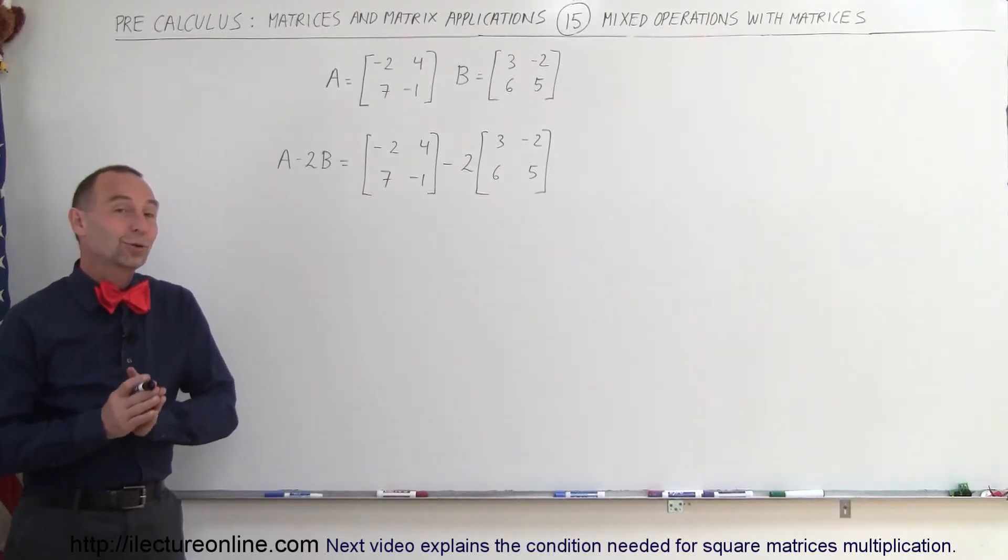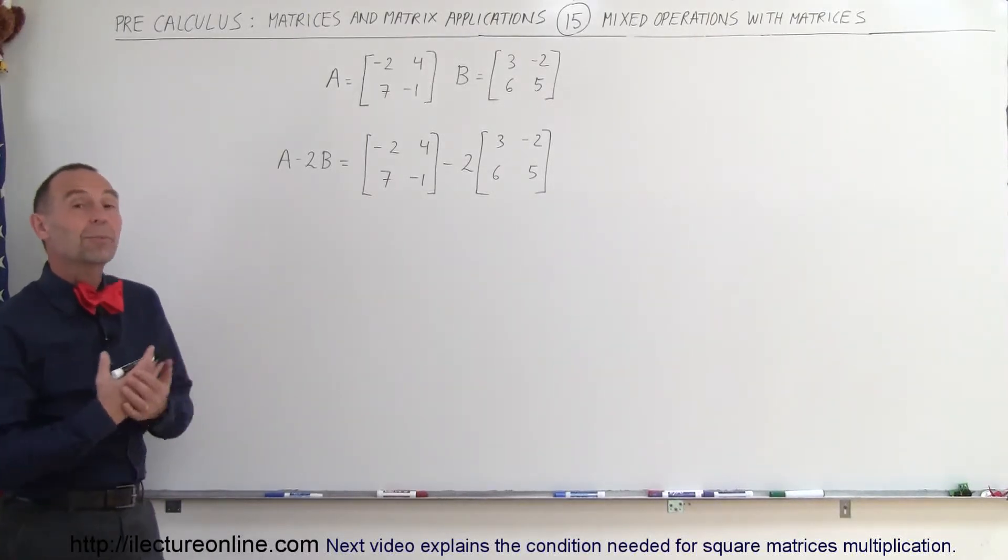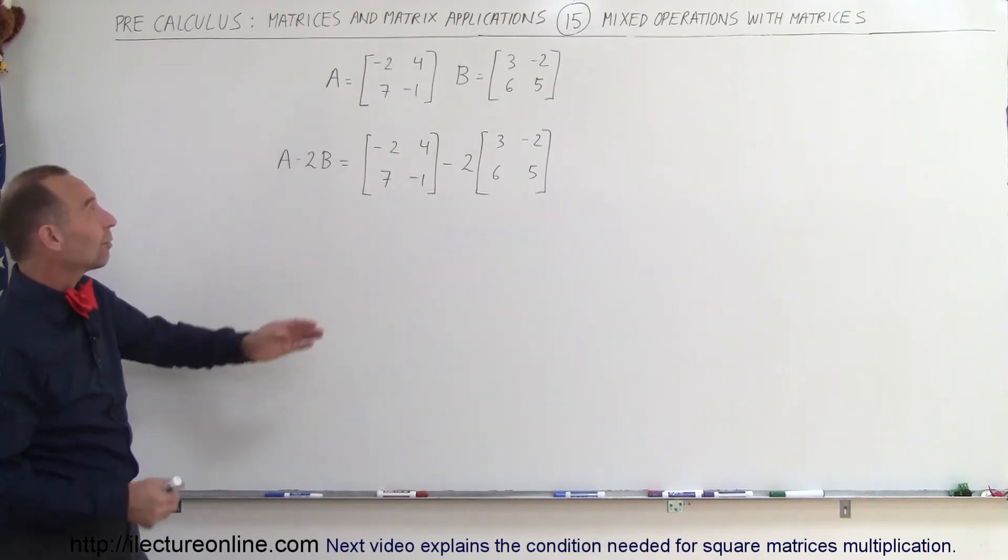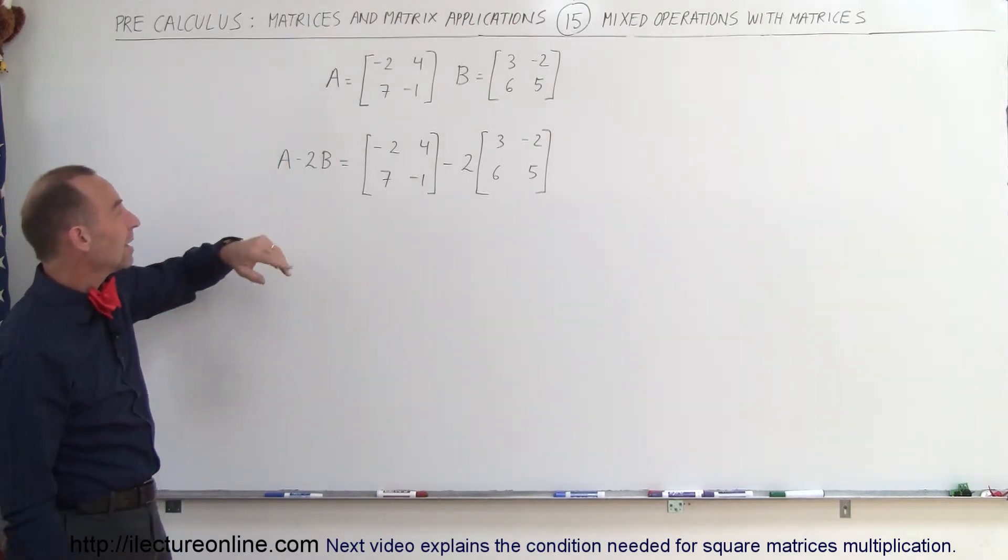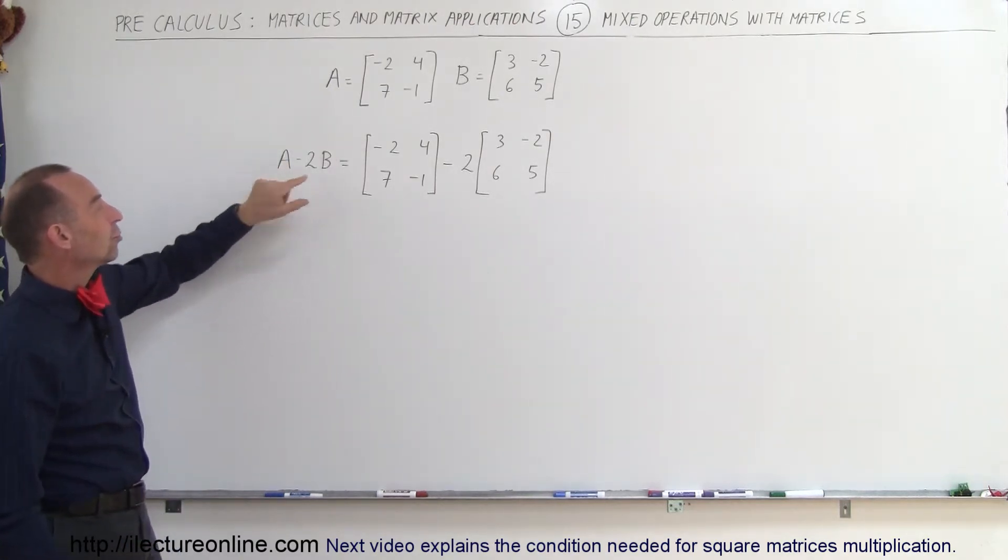Welcome to ElectronLine and here we're going to do an example of how to do mixed operations with matrices. In this case we have matrix A and matrix B and we're going to find A minus 2 times B.